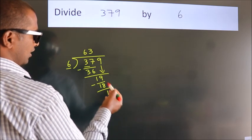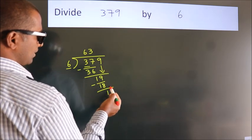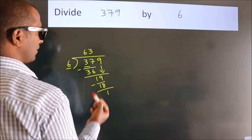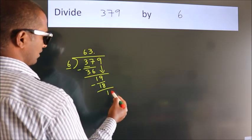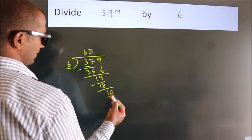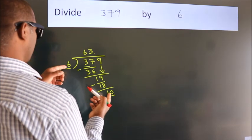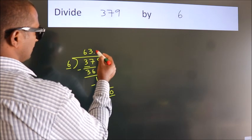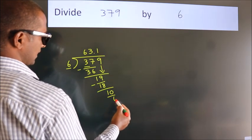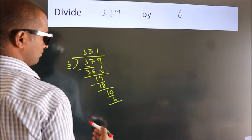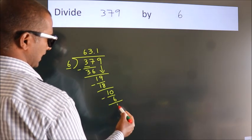After this, no more numbers to bring it down. So what we do is we put a dot and take 0. So 10. A number close to 10 in the 6 table is 6 times 1, which is 6. Now we subtract. We get 4.